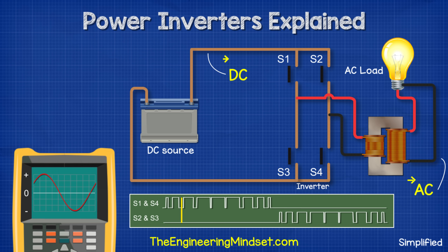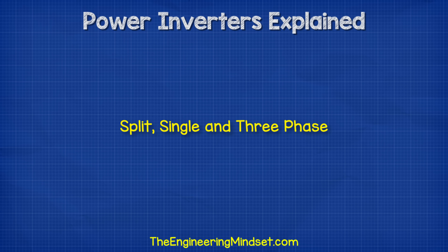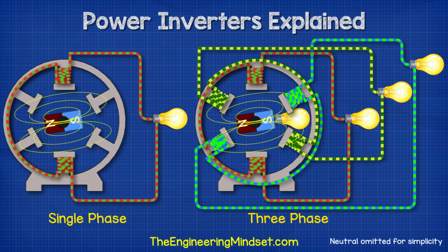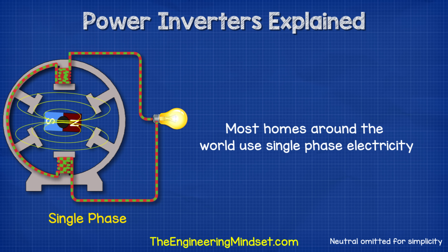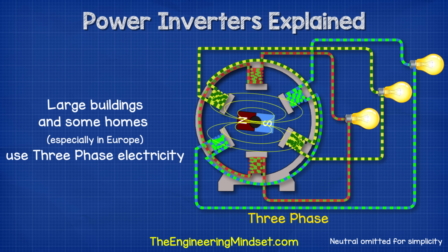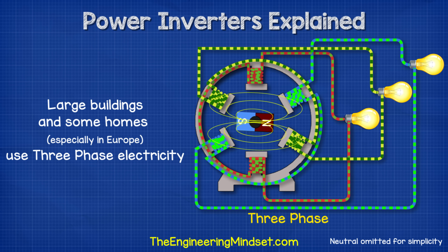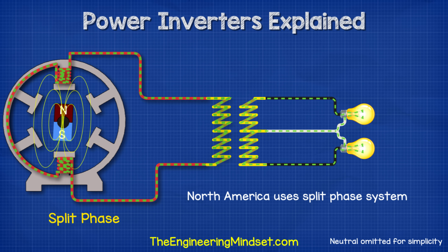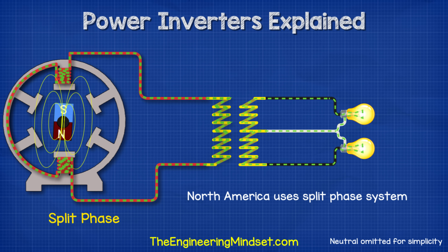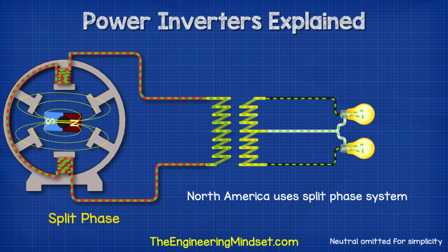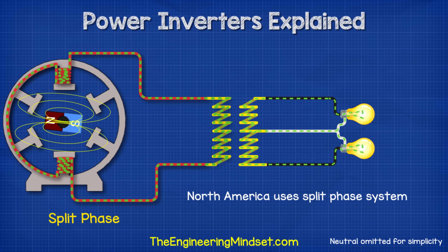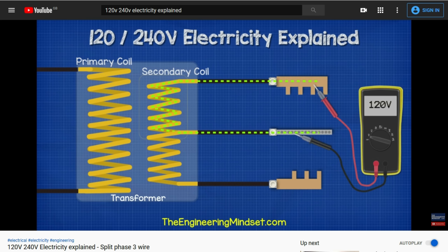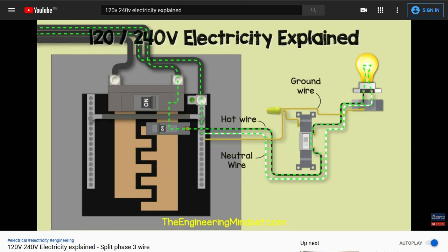But what if we needed more power? We also have single-phase as well as three-phase AC electricity. Most homes around the world use single-phase electricity. Large commercial buildings, as well as some homes — especially in Europe — will use three-phase electricity. Homes in North America use split-phase electricity, where a center-tap transformer splits a single phase into two, providing two hot wires and a neutral. We've covered how split-phase electricity works in detail in a previous video.